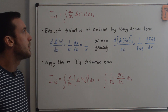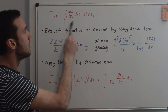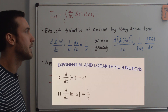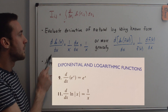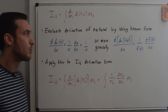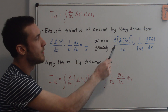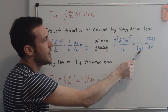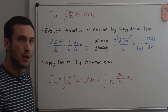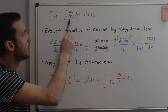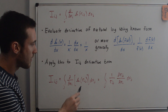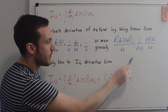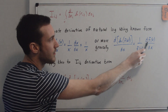I've rewritten the I_ij term and we're trying to figure out the partial derivative of this natural log. We can evaluate the derivative of the natural log using a known form from any calculus textbook: the derivative of ln(x) with respect to x is 1/x. More generally, the derivative of ln(f(x)) with respect to x equals (1/f(x)) times f'(x) — that's the chain rule. Applying this here: the argument of the natural log is r_ij, so we get (1/r_ij) times (dr_ij/dn_i).